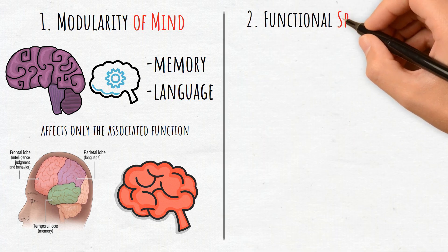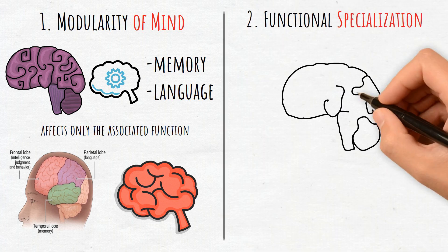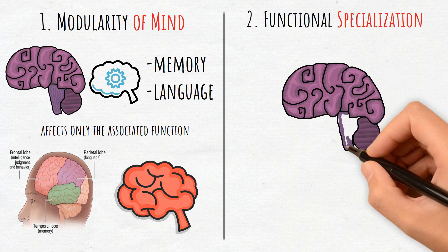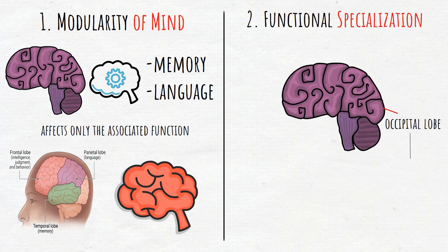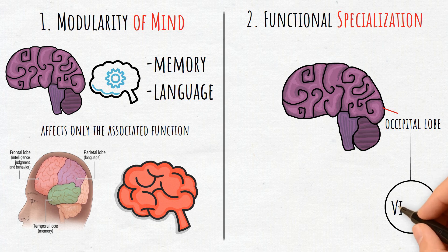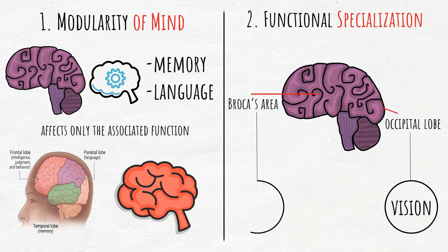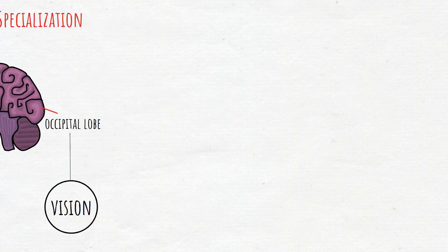2. Functional Specialization. Specific areas of the brain are specialized for certain cognitive functions. For example, the occipital lobe is dedicated to vision, while Broca's area focuses on speech production.